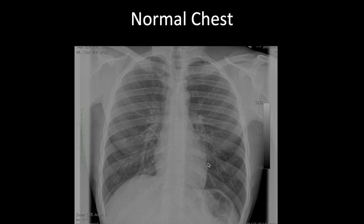You can only reliably evaluate cardiac size on a PA film. By international convention, all frontal radiographs are PA unless labeled otherwise. AP films will be labeled 'AP erect' or 'supine.' All supine films are AP films. If there are no markings, by convention it's a PA film.